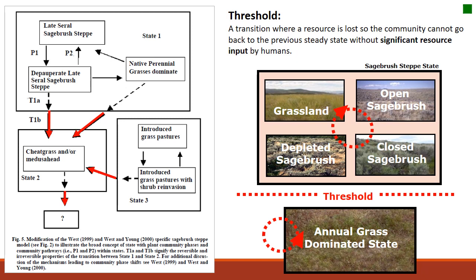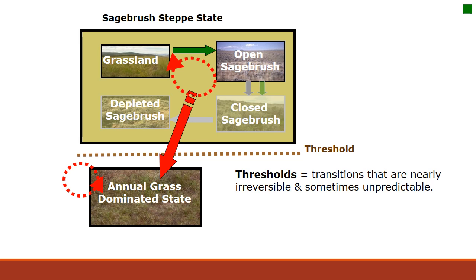Once we get to an annual grass dominated state, thanks to the fire feedback loop it remains really stable. Getting back to the sagebrush steppe state — if at all possible — requires investing a significant amount of resources. Within the annual grass dominated state, management like grazing can reduce the likelihood of fire and start moving toward a healthier ecosystem, but it's still going to take a lot of human input to cross back over that threshold.